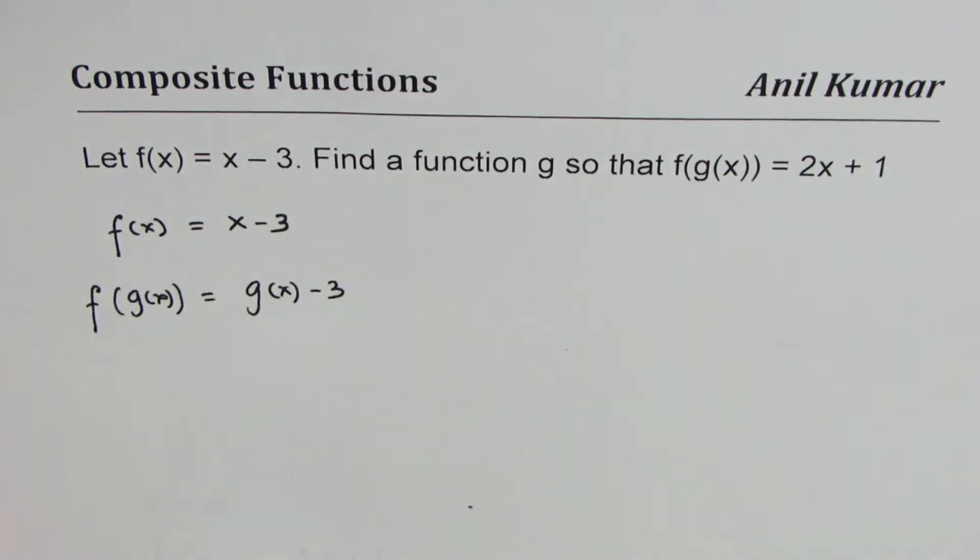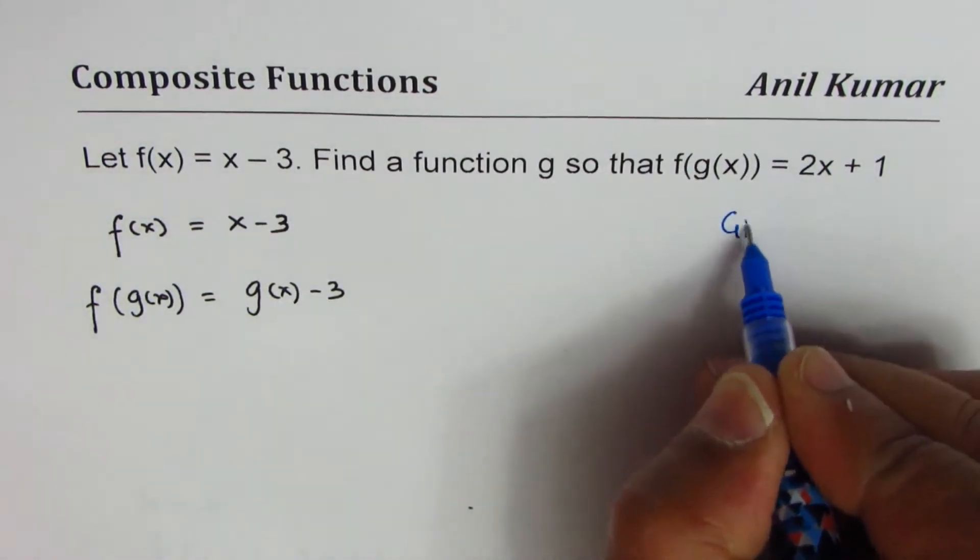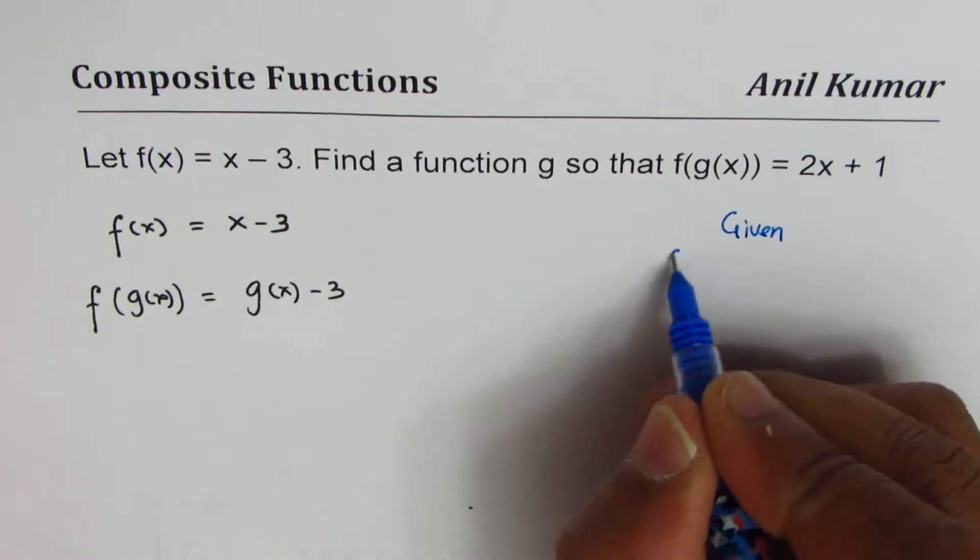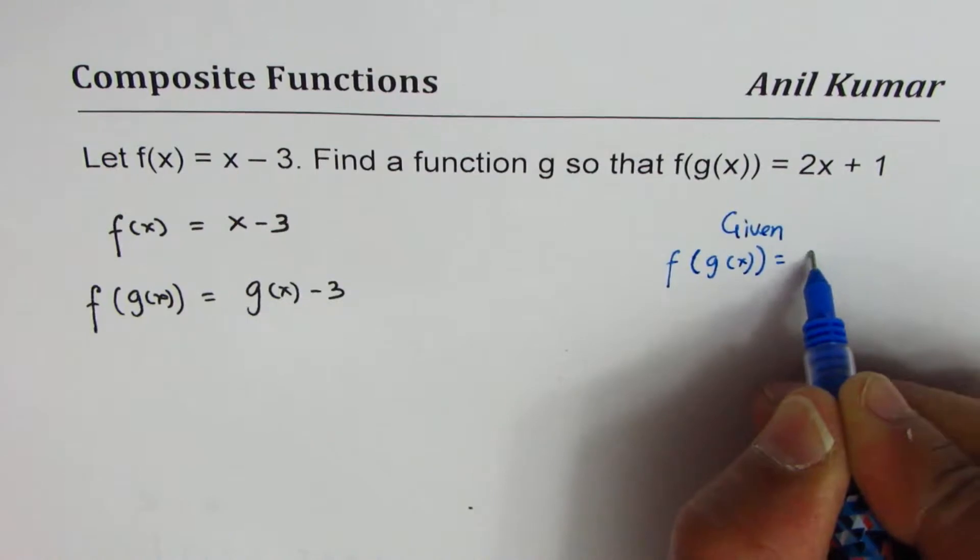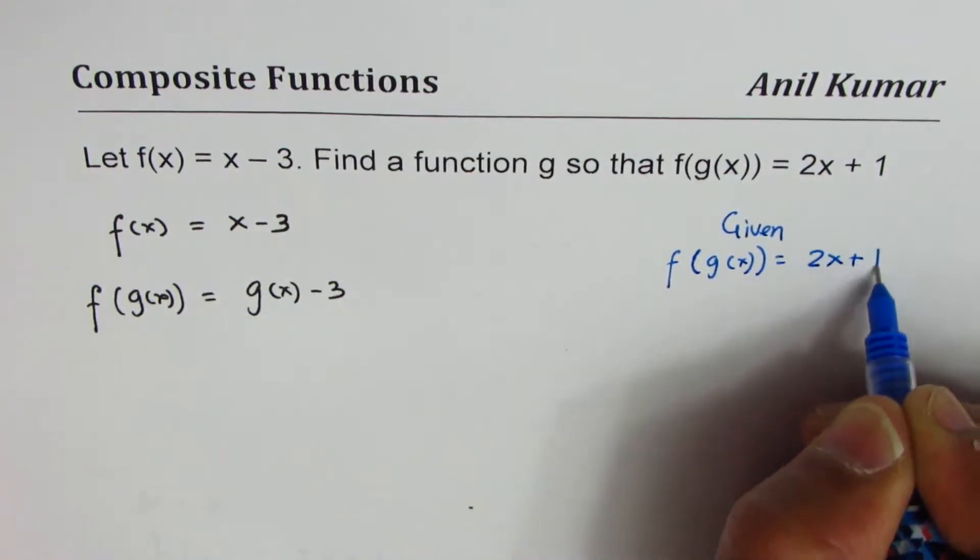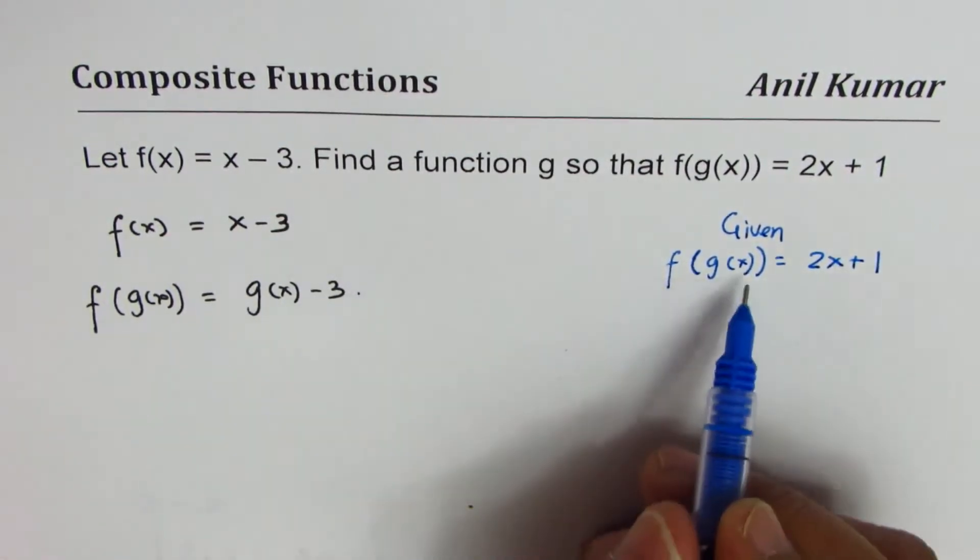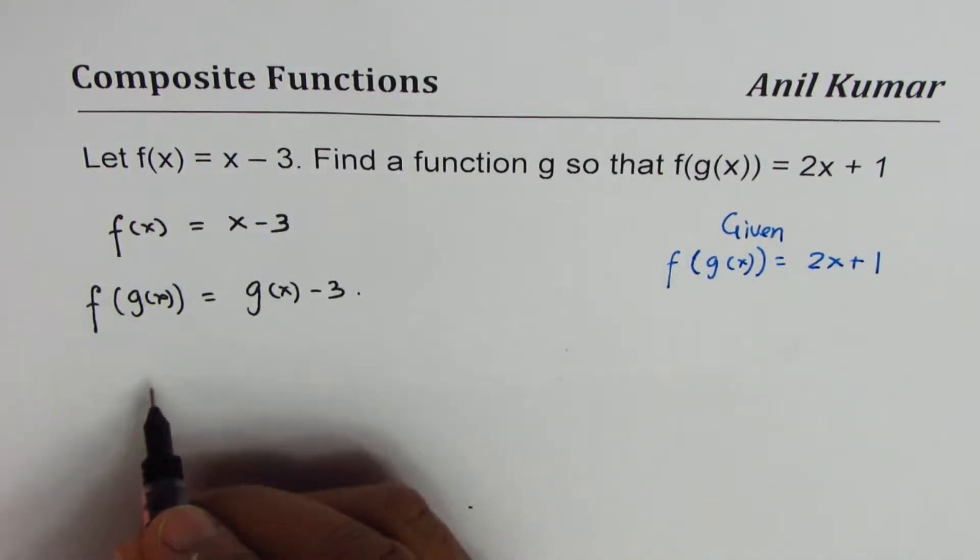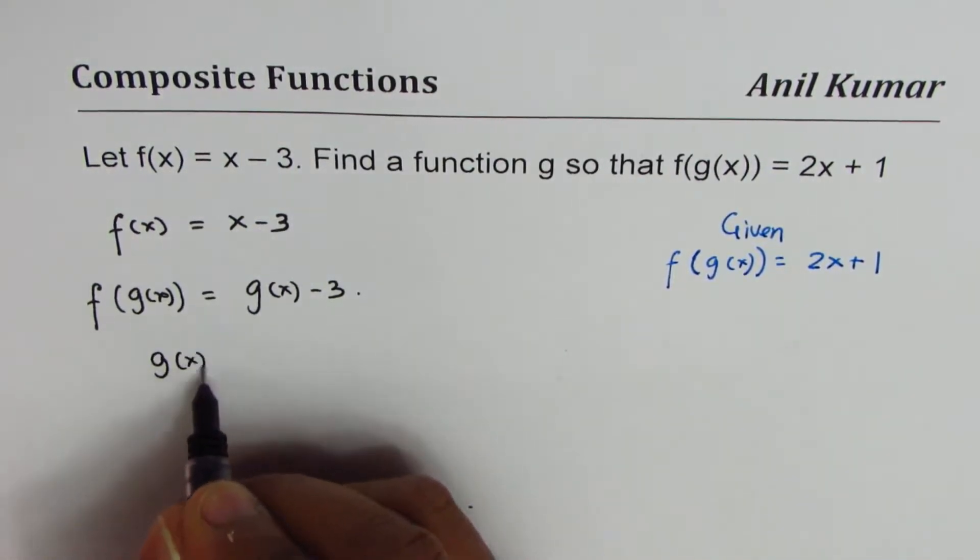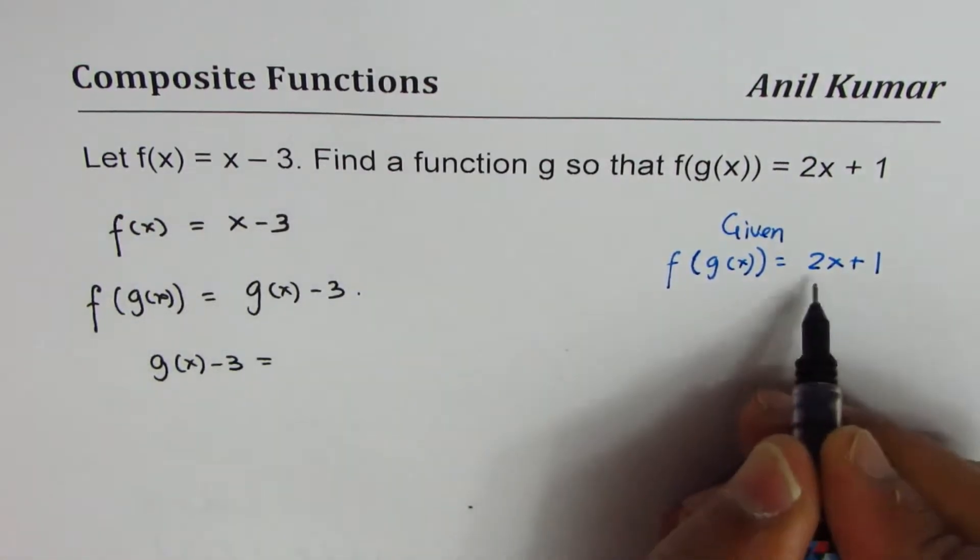But what are we given? We are given that f(g(x)) is indeed equal to 2x + 1, correct? Therefore these two things should be the same, right? So we can equate g(x) - 3 = 2x + 1.